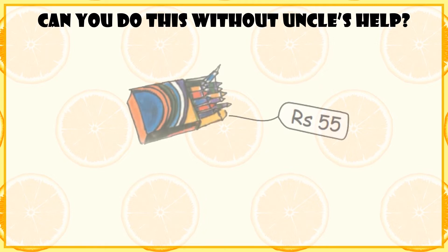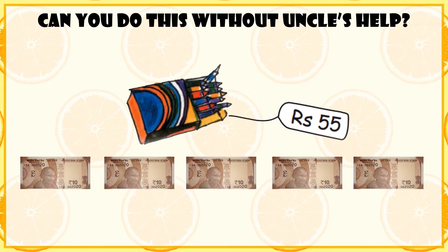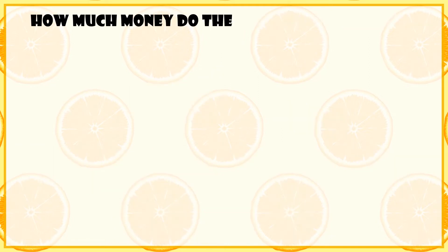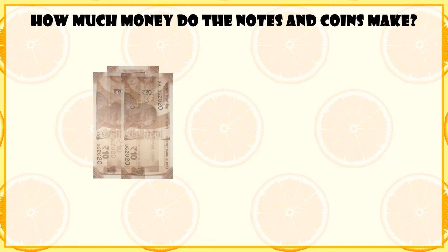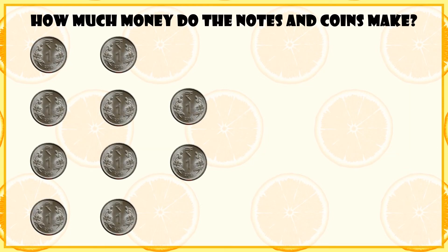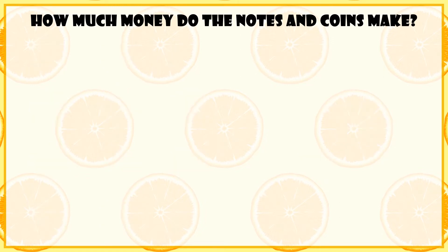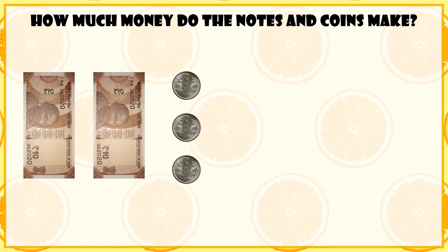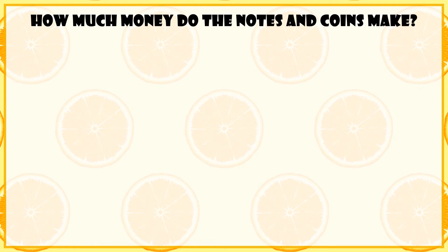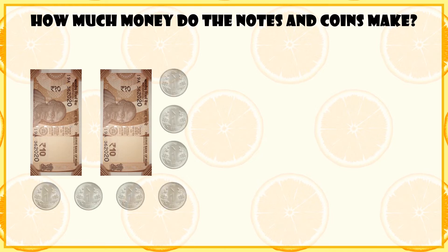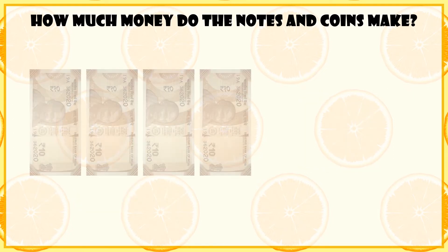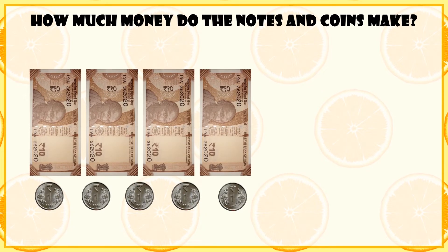Next is colors costing 55 rupees — 5 ten-rupee notes and 5 one-rupee coins make 55 rupees. How much money do the notes make? 5 ten-rupee notes make 50 rupees. 3 ten-rupee notes make 30 rupees. 10 one-rupee coins make 10 rupees. 2 ten-rupee notes and 3 one-rupee coins make 23 rupees. 2 ten-rupee notes and 7 coins of 1 rupee make 27 rupees. 4 ten-rupee notes and 5 one-rupee coins make 45 rupees.